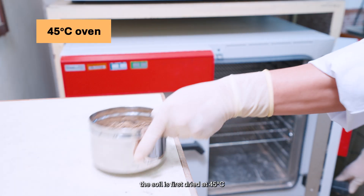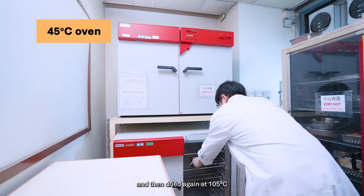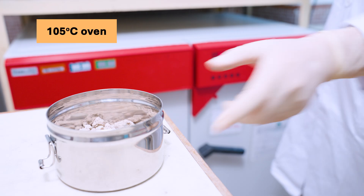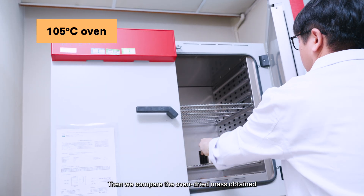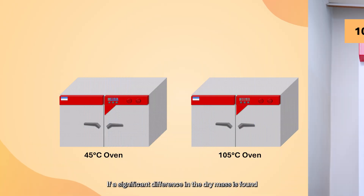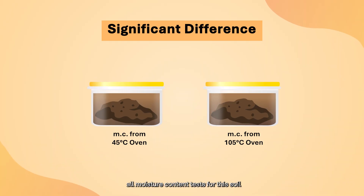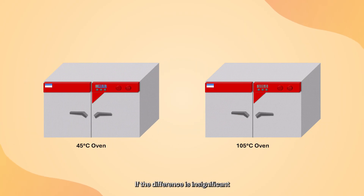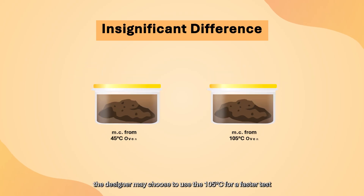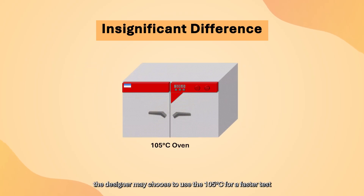In the comparative test, the soil is first dried at 45°C and then dried again at 105°C, and we compare the oven-dried mass obtained. If a significant difference in the dry mass is found, all moisture content tests for this soil should be carried out at 45°C. If the difference is insignificant, the designer may choose to use 105°C for a faster test.